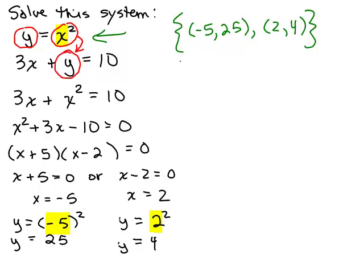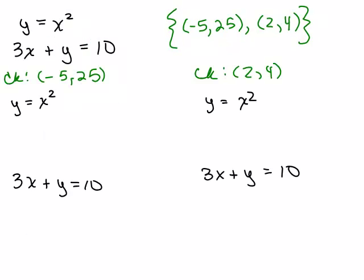Let's go ahead and check that this is really the solution. What does that mean? That means that this solution, (-5, 25), must be a solution of both of the original equations. So let's check now. Here was our original system right here and these are our solutions, so we're going to check one at a time. We're going to check that (-5, 25) works in each of these equations. So we're going to plug in -5 for x and 25 for y.